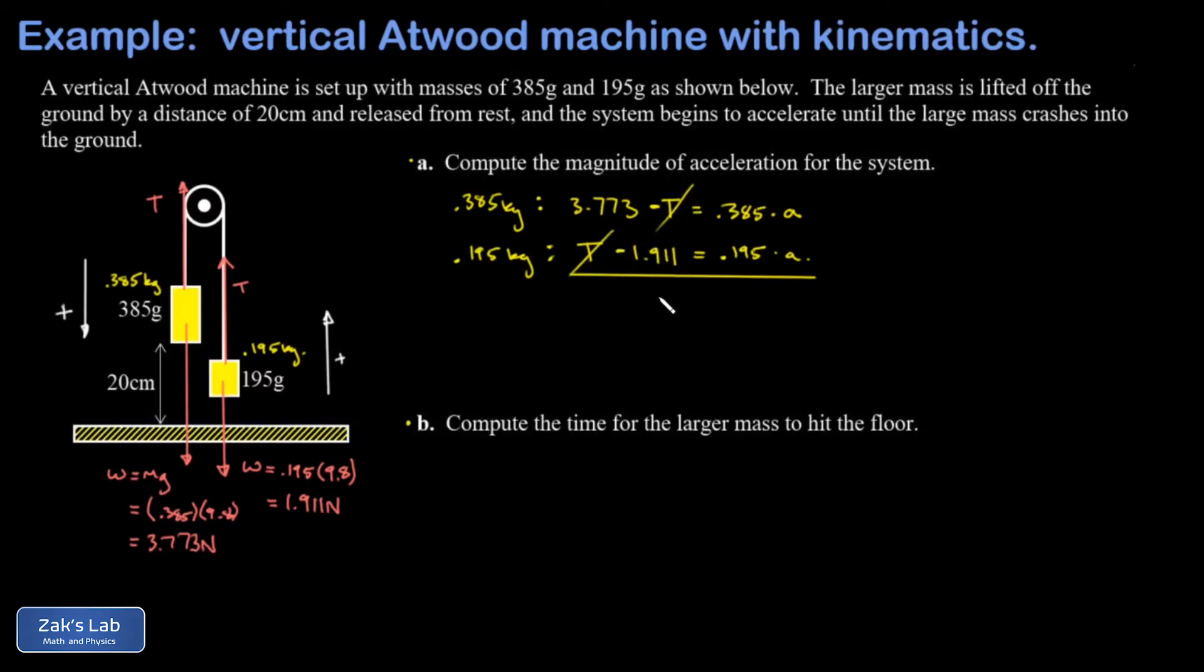On the left hand side I have 3.773 minus 1.911 that comes out to 1.862. On the right side I have 0.385a plus another 0.195a and that comes out to 0.58a. We can simply solve for a by dividing by that coefficient and we get 3.21 meters per second squared.